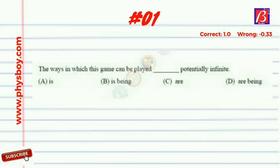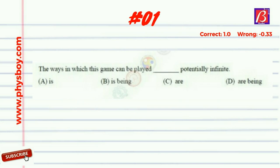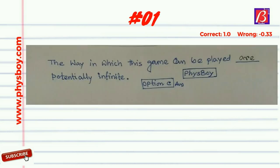Question number one: 'The way in which the game can be played dash potentially infinite.' You have to fill the blank with a suitable word from options A, B, C, and D. I request you to pause the video and try to solve the question. The suitable word is 'are', that is option C. So the sentence reads: 'The way in which this game can be played are potentially infinite.' Option C is the correct answer.